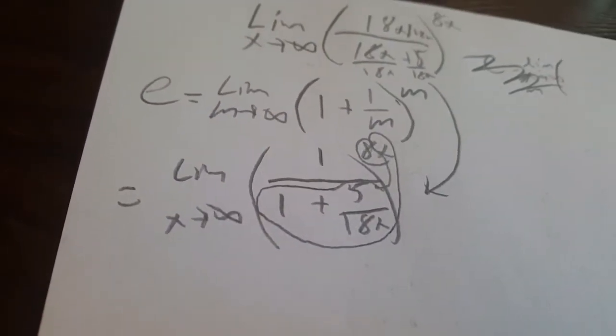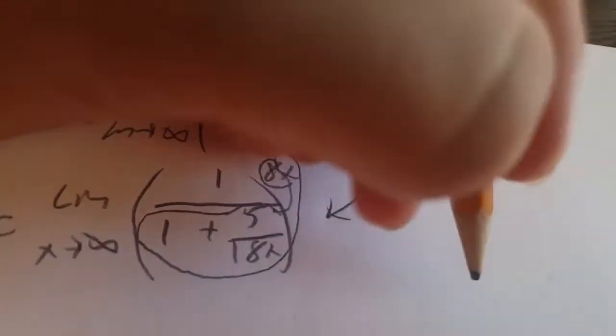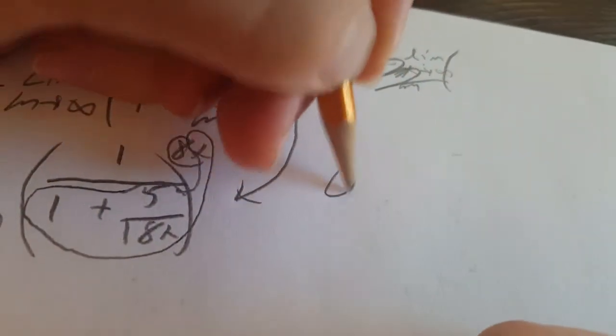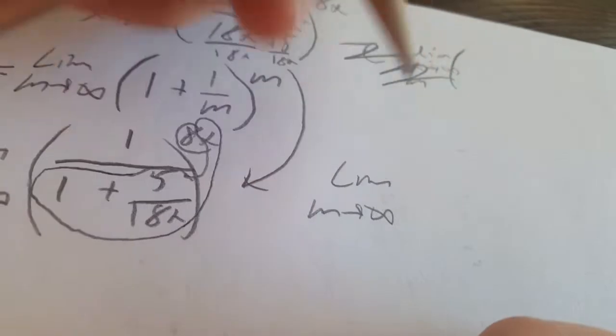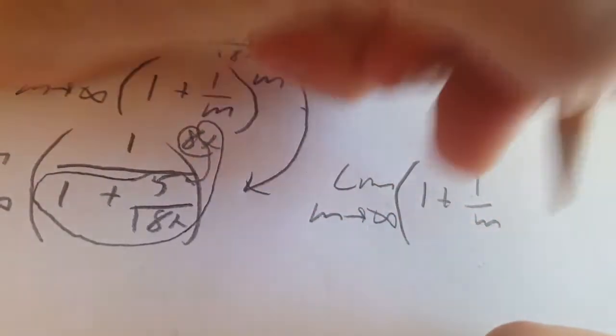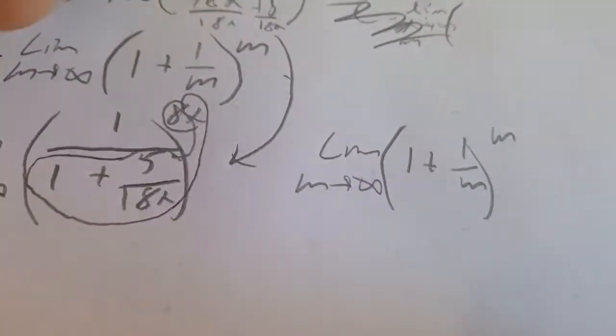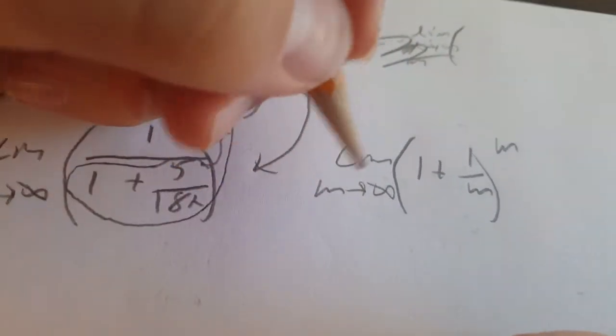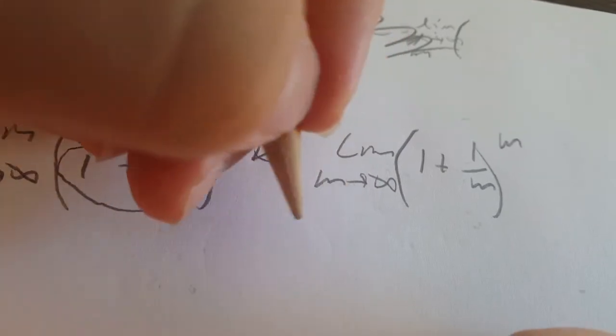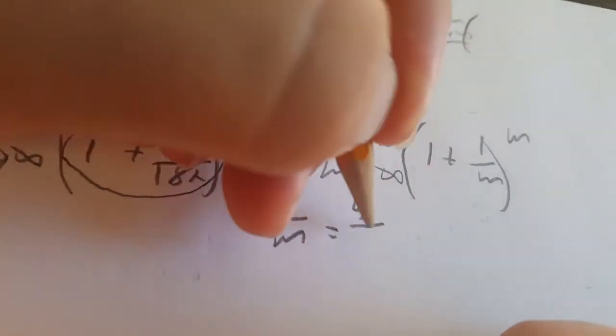This is very similar to the definition of e. Alright, so, from this, we can deduce, actually I should write it again, this is a different limit. The limit as m is approaching infinity, we can easily say that this is the same as this, because it's a quotient. So, let's write it out.